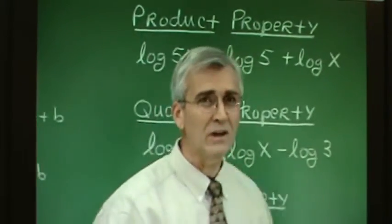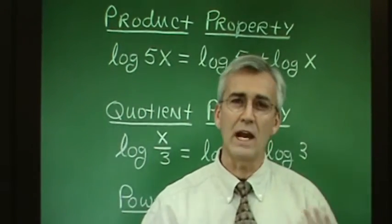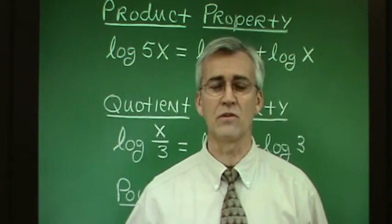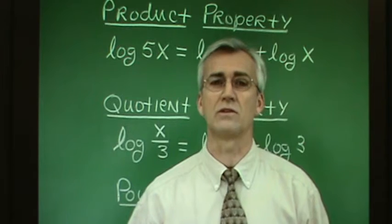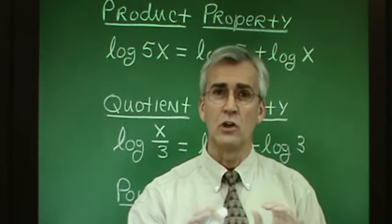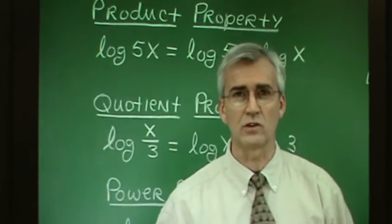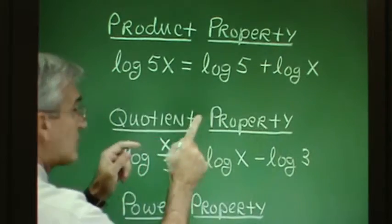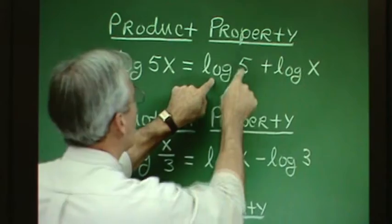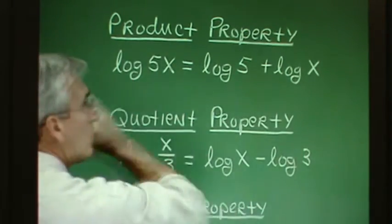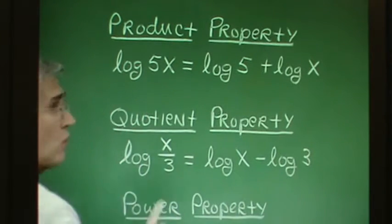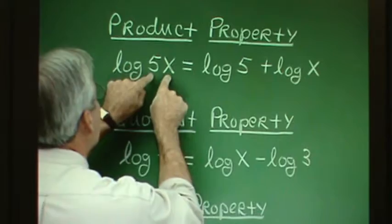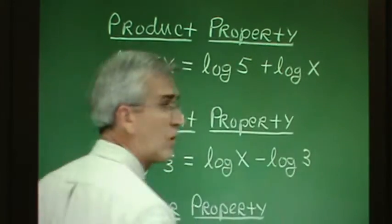Just realize that with a little experience, all of this will become clear. First, the product property — related to the idea that when you multiply like bases you add exponents. The logarithm of a product equals the log of one factor plus the log of the other factor. When you're taking the logarithm of a product, you can rewrite it as the log of one factor plus the log of the other factor. We need to be able to go both ways: expand and contract these expressions.